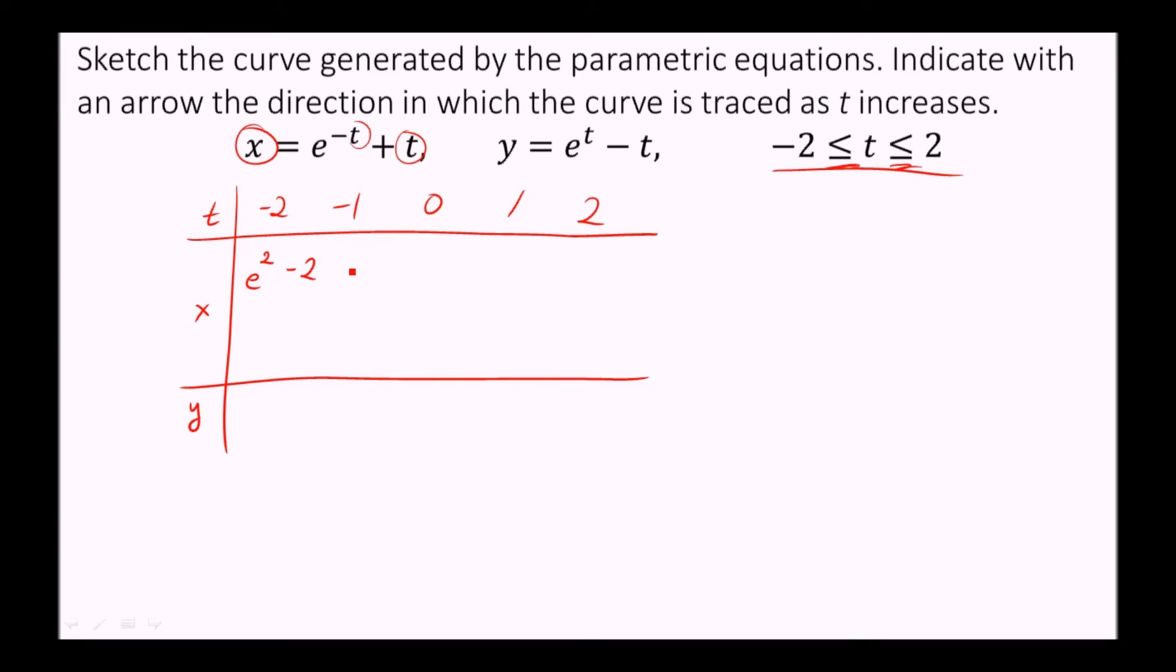When t is negative one, we get e minus one. When t is zero, we have e to the zero plus zero, which is just e to the zero, and anything to the zero power is one. Then we have e to the negative one plus one, and e to the negative two plus two.